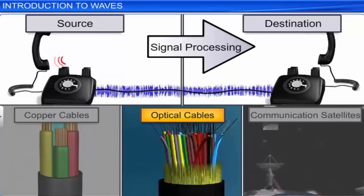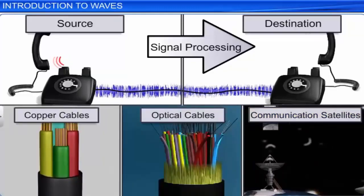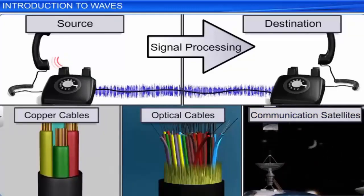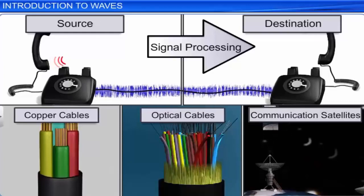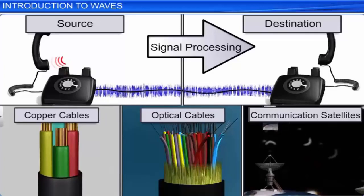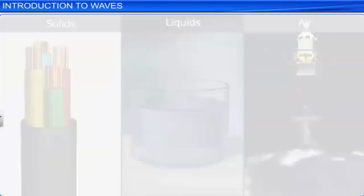It is not only solids, liquids and gases — waves can also travel through a vacuum. For example, sunlight travels through a vacuum before it reaches the Earth's atmosphere.